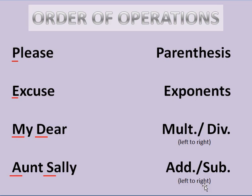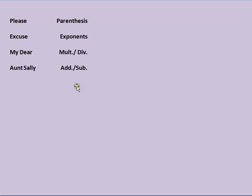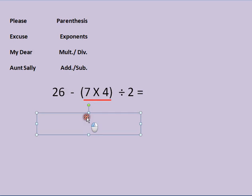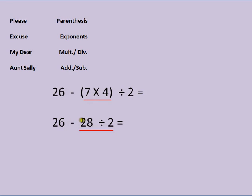I'm going to show this with a couple of problems. I have my little cheat sheet up here to remind us what to do. The first problem is 6 minus (7 times 4) divided by 2. I've already underlined what we do first because we have parentheses right here. 7 times 4 is 28, so I can rewrite and simplify the problem: it becomes 6 minus 28 divided by 2.